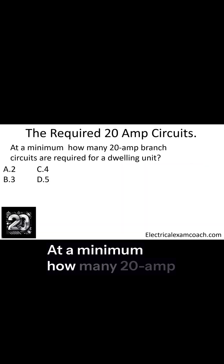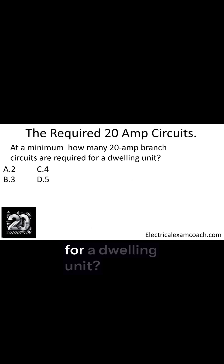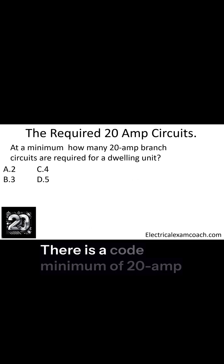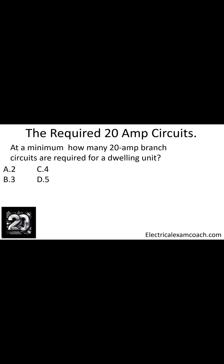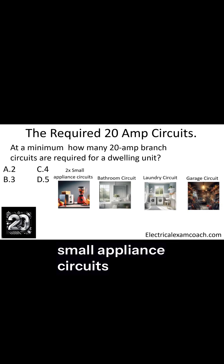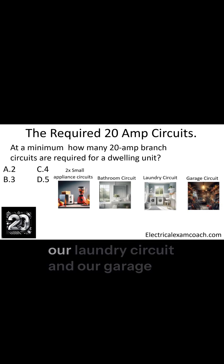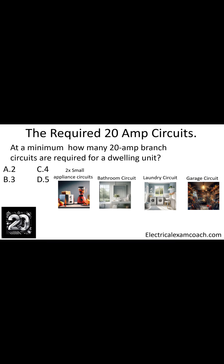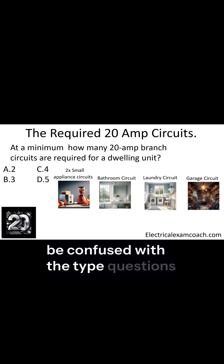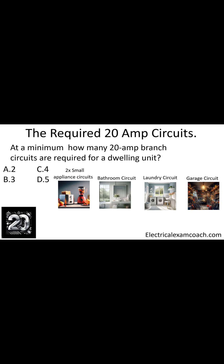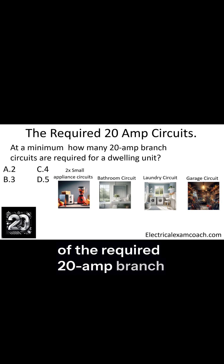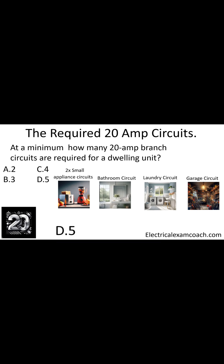At a minimum, how many 20 amp branch circuits are required for a dwelling unit? This is asking a very specific question. There is a code minimum of 20 amp branch circuits required in every dwelling unit. The correct answer is five. It's going to include our two small appliance circuits, our bathroom circuit, our laundry circuit, and our garage circuit. These are the code minimum of the required 20 amp branch circuits in a dwelling, and the answer is five.